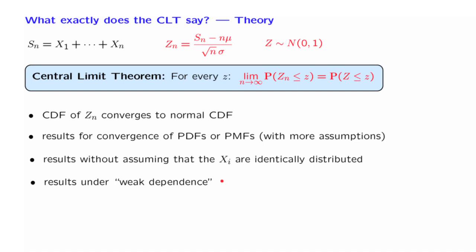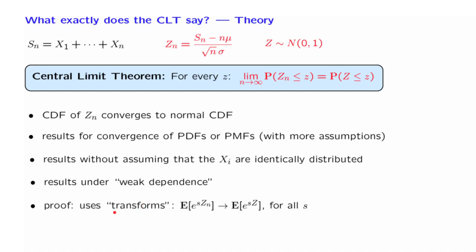Finally, there is the question of how this result is proved. One way, which is how it was originally established a long time ago for the special case of Bernoulli random variables X — in which case S is binomial — was by carrying out algebraic manipulations on the binomial formulas. But this was a derivation that would not generalize. For the general case, the proof is obtained using so-called transform methods, which is a topic we are not covering. We consider this function of the random variable Zn, where S is some parameter.